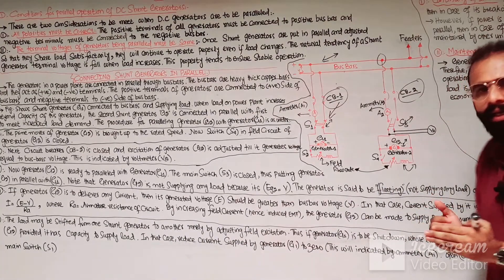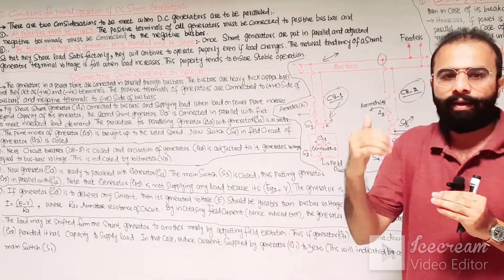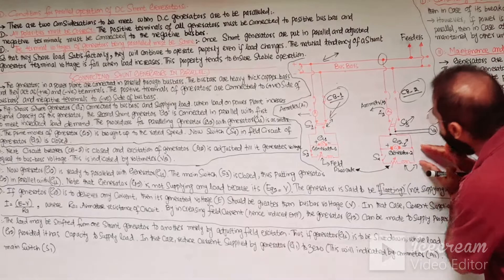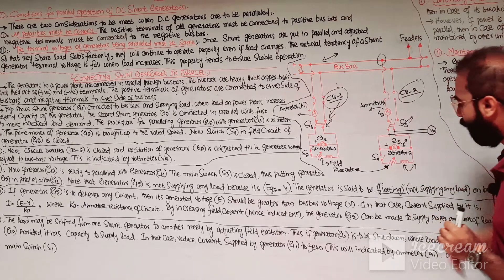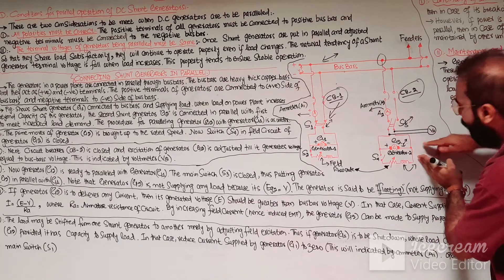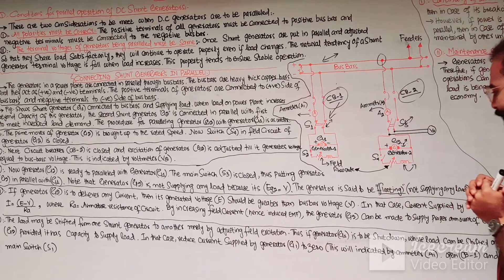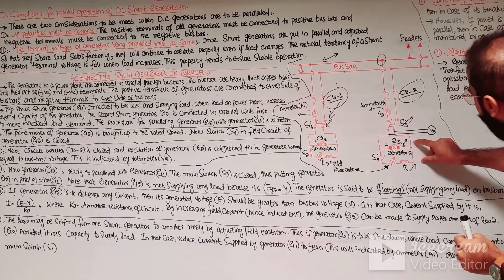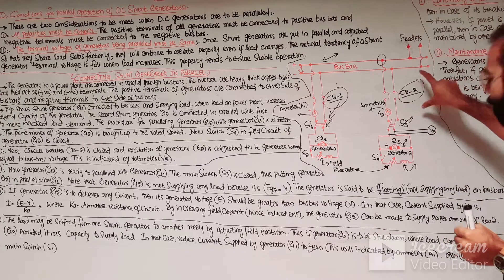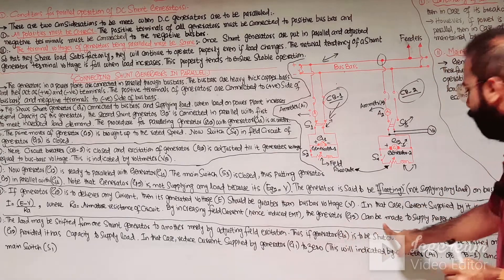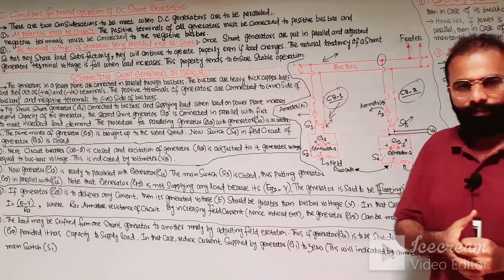To increase the generated voltage of G2, increase the field excitation of the G2 generator. By adjusting the field excitation through the field circuit, the EMF produced by G2 becomes greater than the bus bar voltage, so generator G2 can be made to supply the proper amount of load to the bus bar.